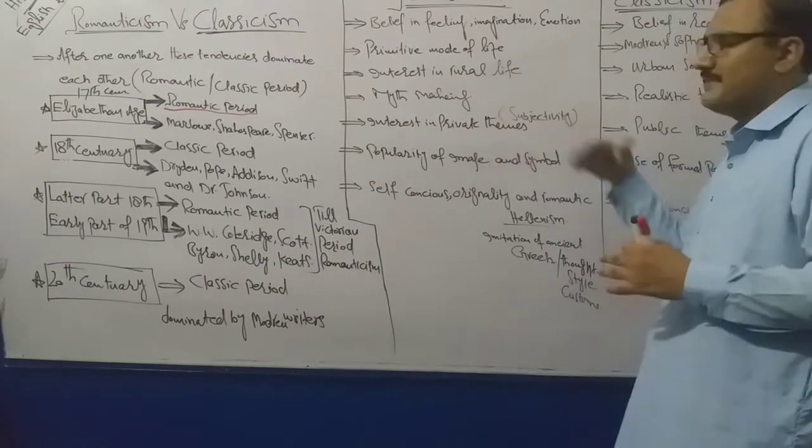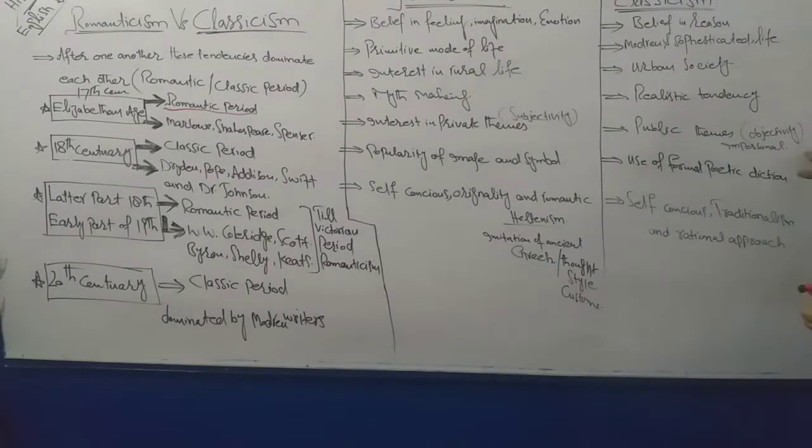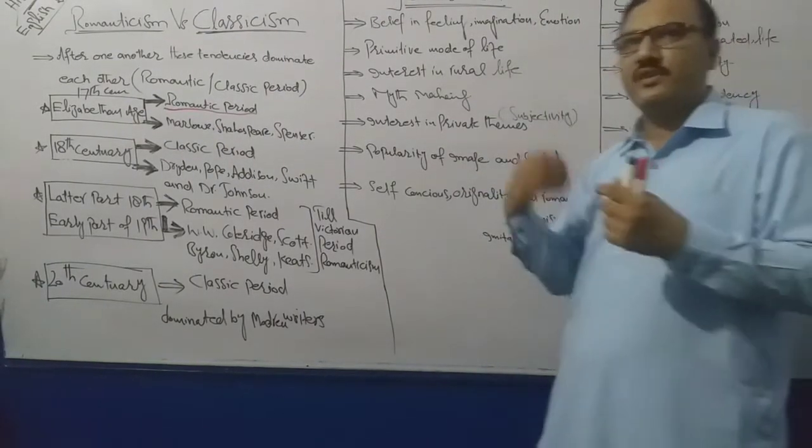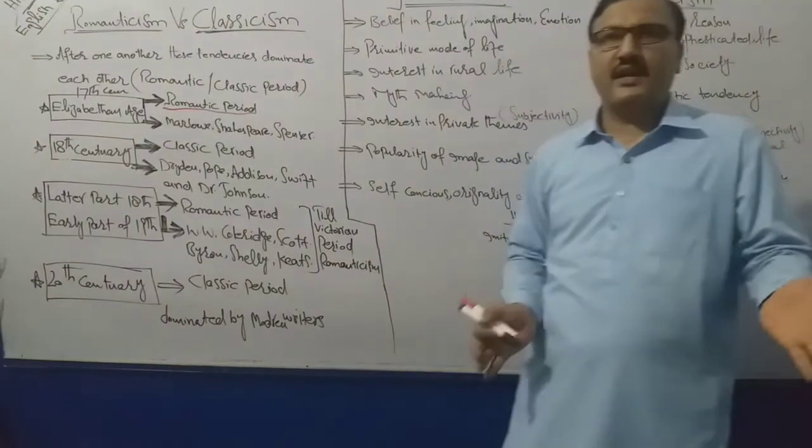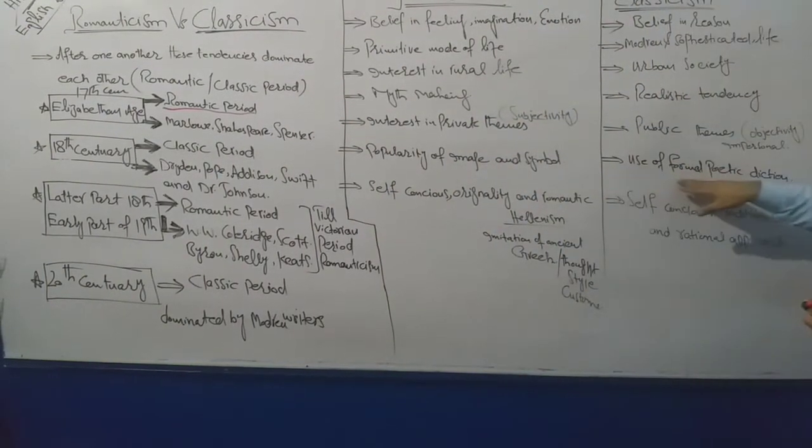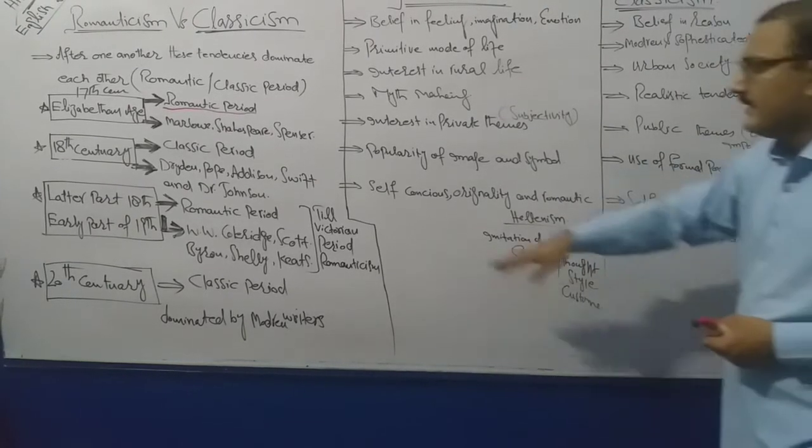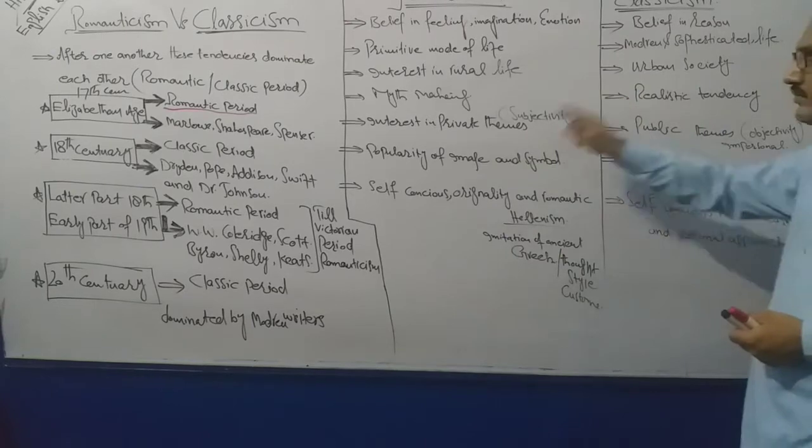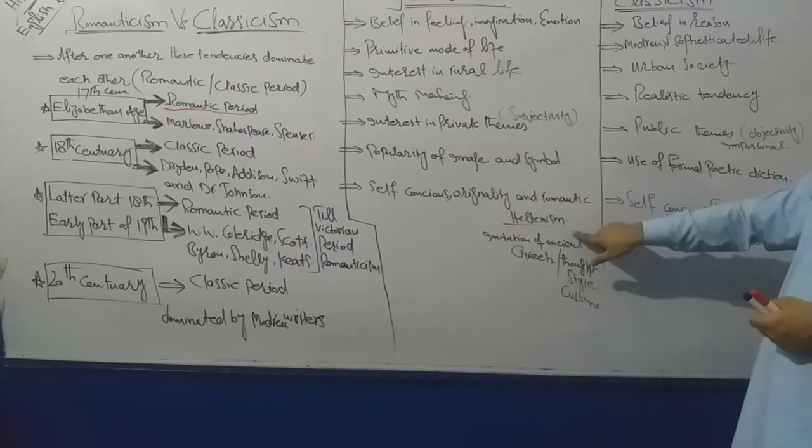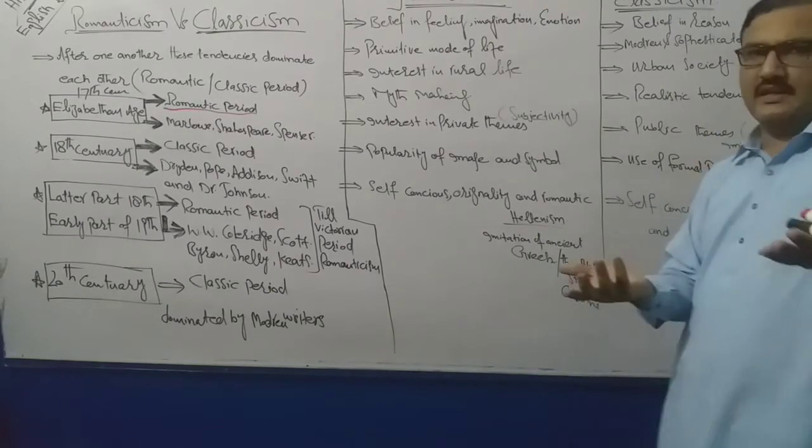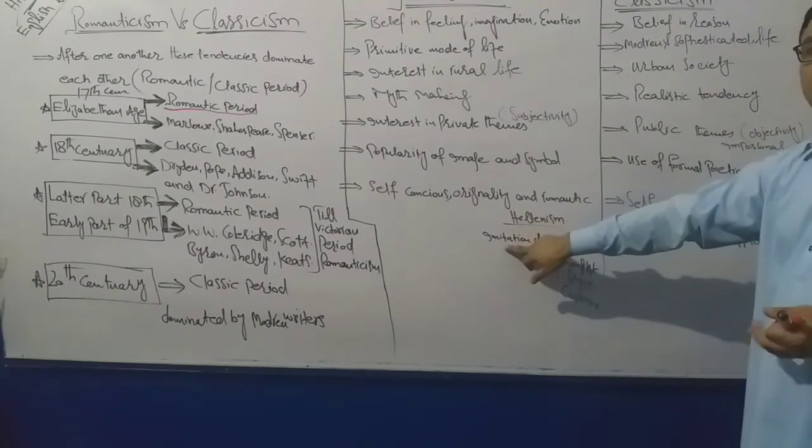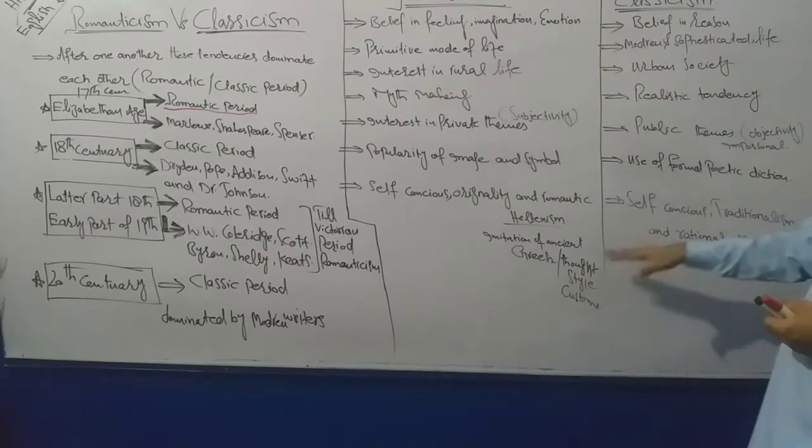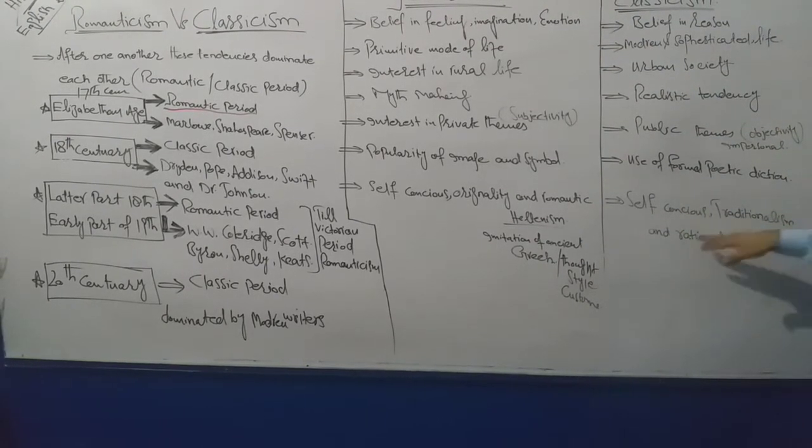Romanticism is the belief in subjective themes, popular and common themes. Classicism has rules of poetic diction. Romanticism has self-conscious originality and romantic Hellenism. Classicism has imitation means copy. Romanticism is the tradition, classicism is a rational approach.